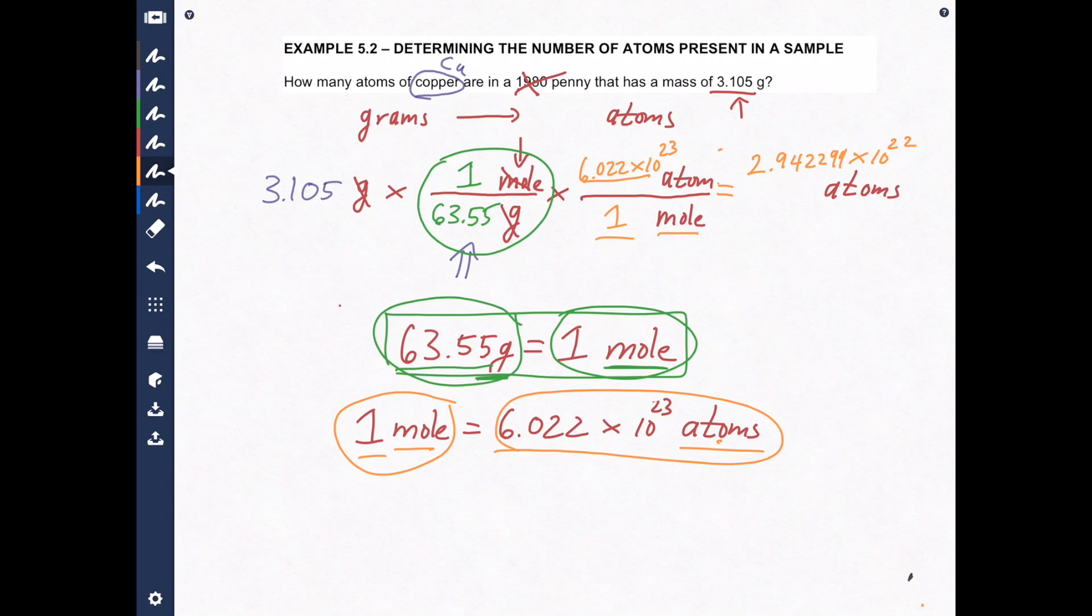So let's take a look. Here we have 4 sig figs, here we have 4 sig figs, and here we have 4 sig figs. And this number has more than 4. Let's not even worry about how many it has. So there's my fourth significant digit. Then the following number is a 2. So my final rounded complete answer will be 2.942 times 10 to the 22 atoms.